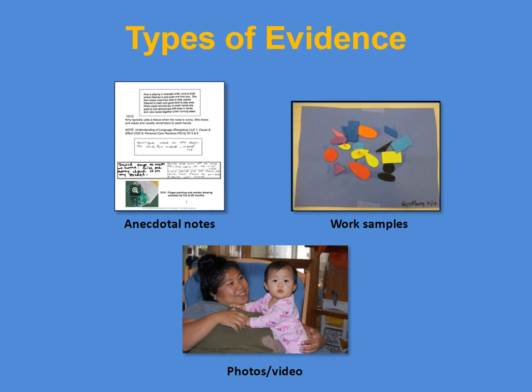At the heart of the DRDP 2015 assessment is the collection of evidence to document infants and toddlers' knowledge and development. The most common forms of evidence you will be collecting are descriptive observation notes, photo, video, and audio documentation, and work samples for older toddlers. Keep the DRDP 2015 domains and measures in mind when collecting evidence. Your goal is to have enough evidence collected at rating time to have a solid picture of each child's development across the domains and measures of the DRDP 2015.